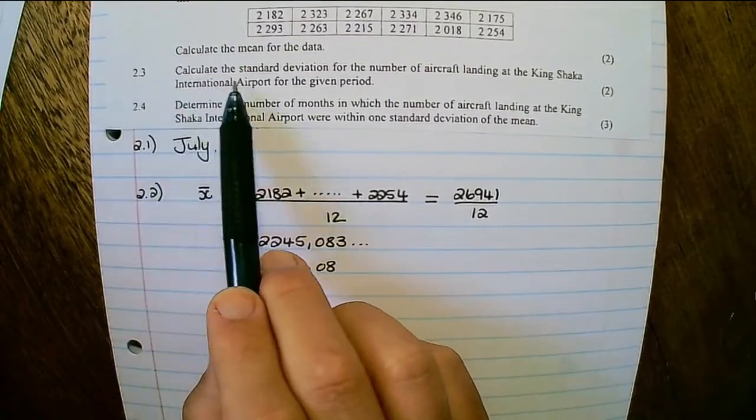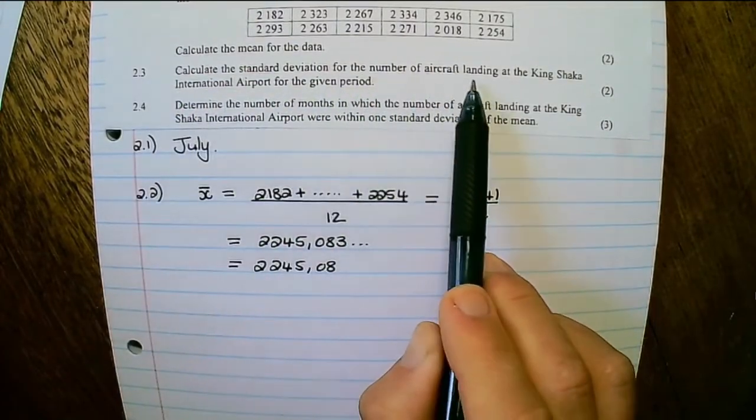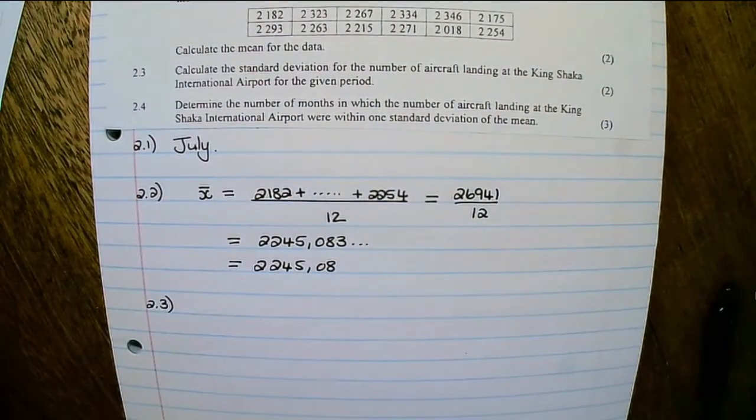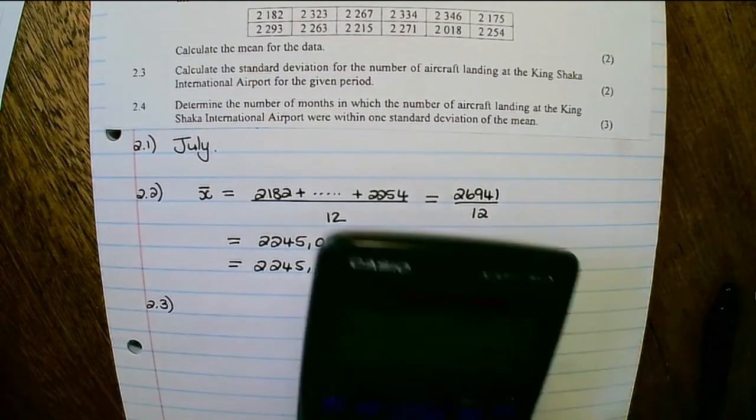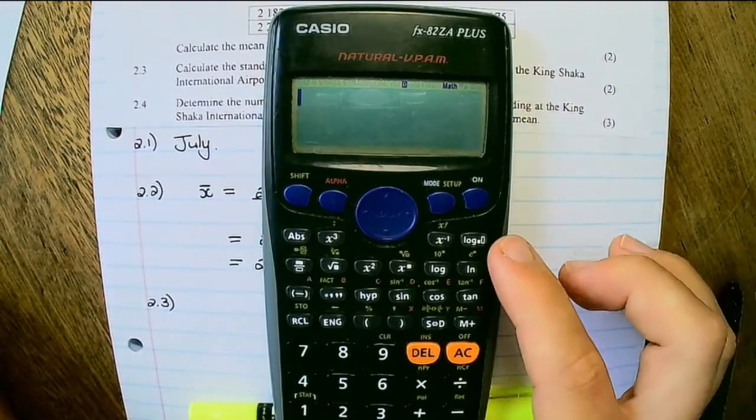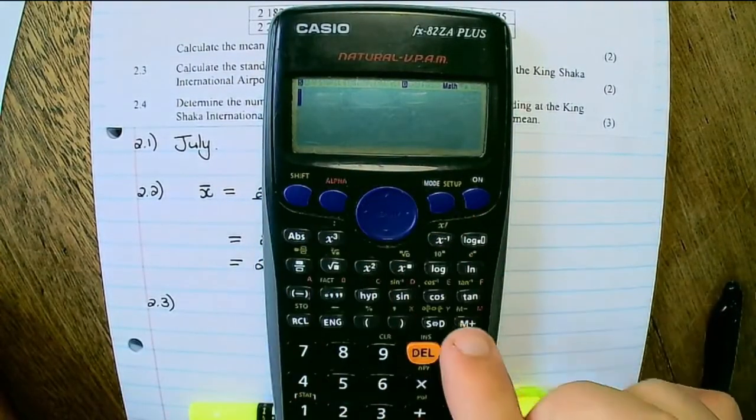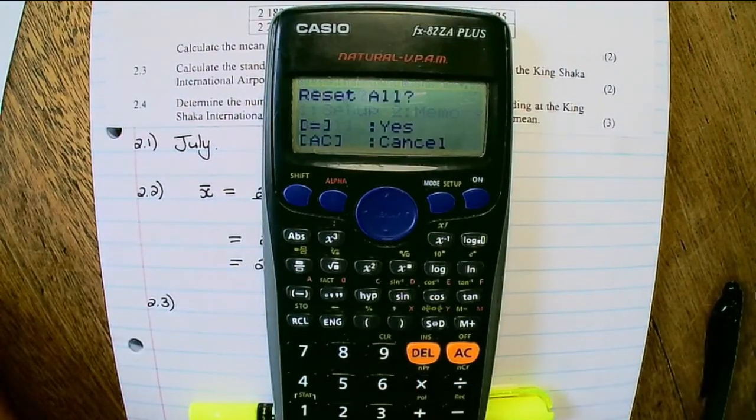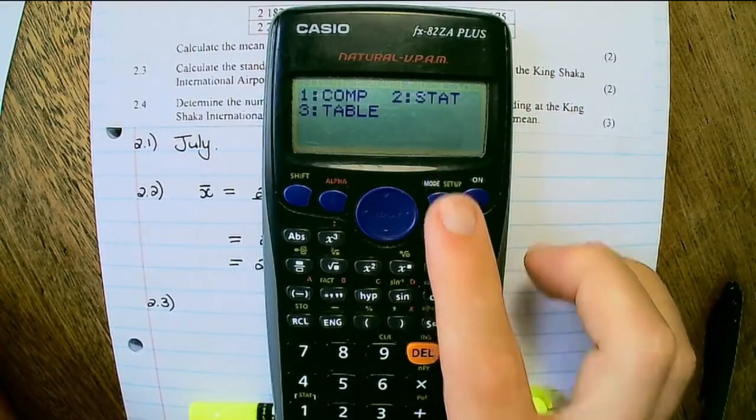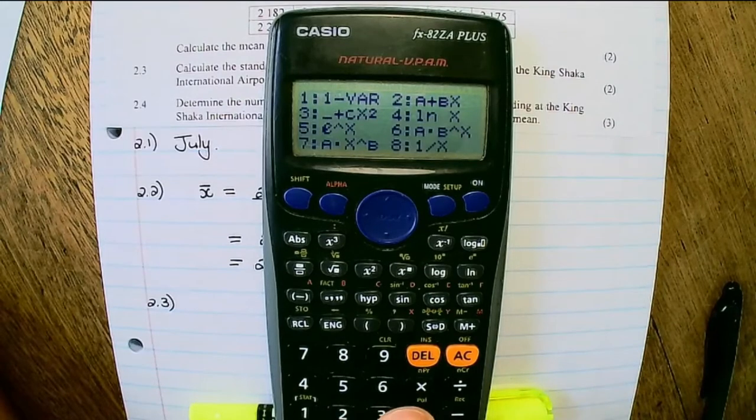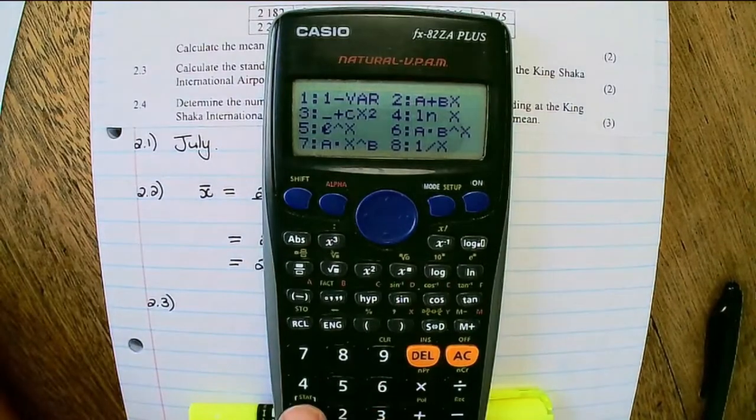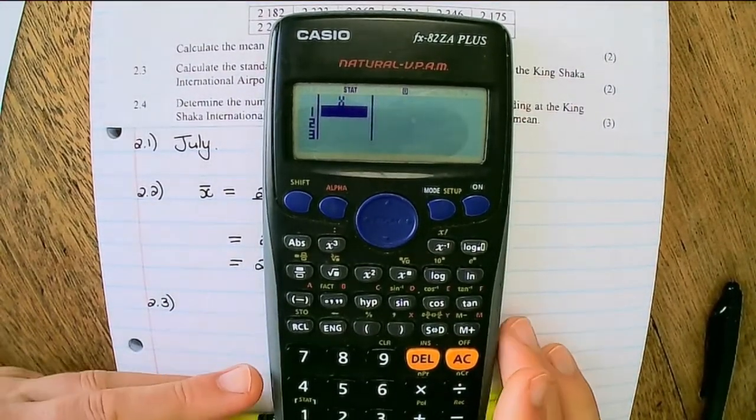Question 2.3: Calculate the standard deviation for the number of aircraft landing at the King Shaka International Airport for the given period. We will use our calculators for this question. In the previous question I already used my calculator to enter data, so first I need to clear that. It's shift 9 and then clear all. Now I'm going to put my calculator back into statistics mode. It's mode 2, and I want to find the standard deviation so it's the first option, 1. Now I enter the data values.